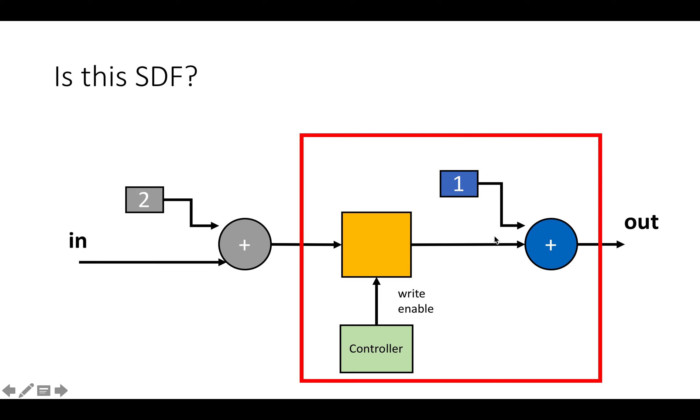And the answer is it kind of depends on how we define the nodes and the firings. So the register, if you remember, takes in one piece of data, and then it outputs two pieces of data. But it does so over several cycles.